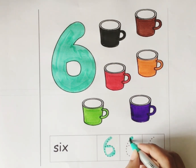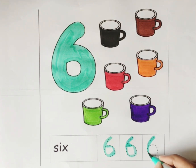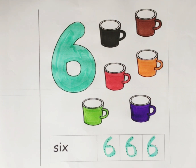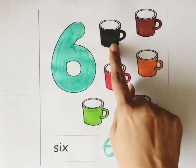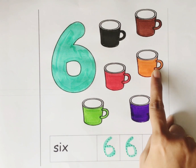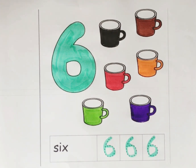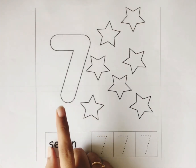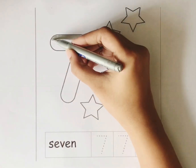Let's trace the number 6. Number 6. Let's count the total number of mugs: 1, 2, 3, 4, 5, and 6. Total we have 6 mugs.